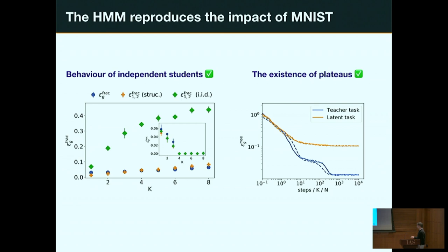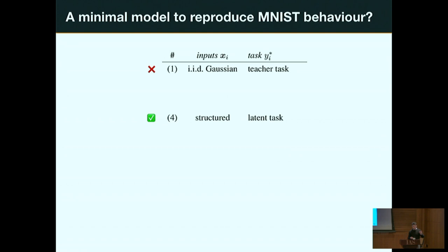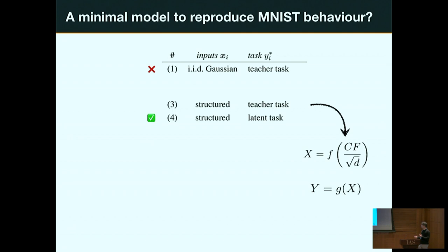So this model does what we want. There are four combinations of structured/unstructured inputs and tasks. The vanilla teacher-student model — unstructured inputs and unstructured task — did not look like MNIST. The hidden manifold model — structured inputs and latent task — does. What about the two mixed cases? With structured inputs but labels as a direct function of the full input, this looks like the teacher-student setup, not like MNIST. So you need structure in the task.